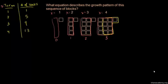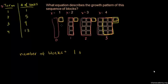So what's the pattern? It looks like we're always going to have one block, plus a certain number of columns of four. How many columns do we have? When x equals 1, zero columns; when x equals 2, one column; when x equals 3, two columns. So when x equals anything, we have x minus 1 columns. When x is 2, x minus 1 is 1. When x is 3, x minus 1 is 2.